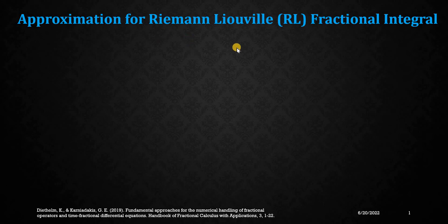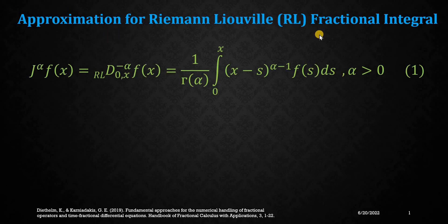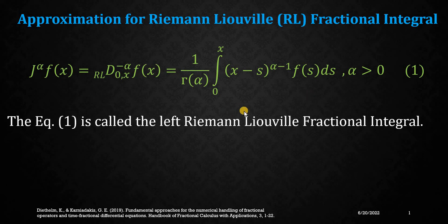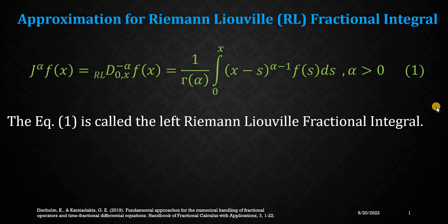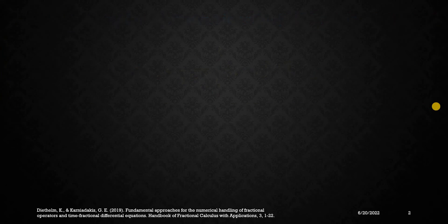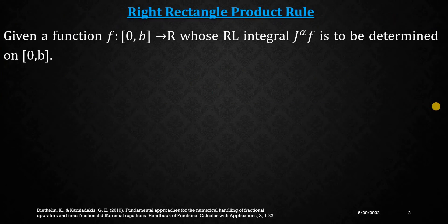We will derive another rule called the right rectangle product rule. This RL fractional integral is defined by equation 1, as you can see on this screen. This definition is also known as the left Riemann-Liouville fractional integral. So we have equation 1, which is the definition for this RL fractional integral. Now, the right rectangle product rule — in order to get this rule, we proceed as follows.